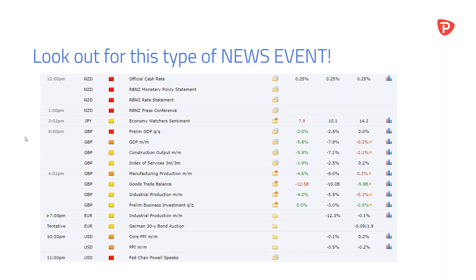We had some negative leads from the US and we were still able to post a good result today on our index because the Australian budget was good news for the market. That's going to pale in significance as we move closer to the US election, because although it's a four-year event this one is going to be like no other. We can rest assured the swings each side are going to be pretty wicked — we had a sign of that on Monday and Tuesday — so the news is going to be even more important over the next three to four weeks.